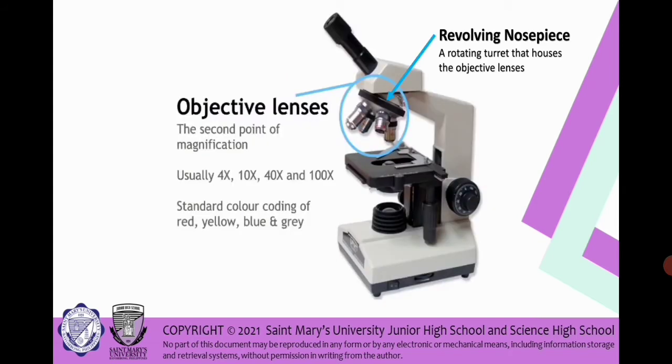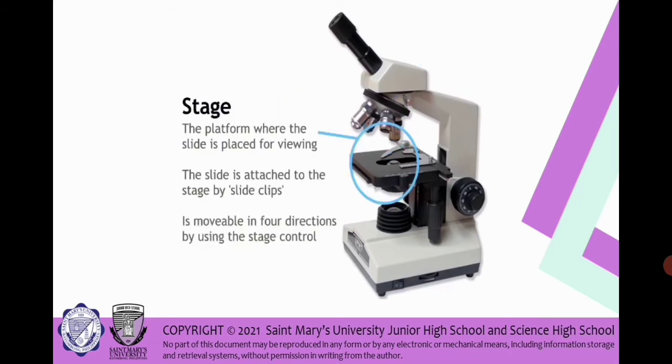Next part we have the revolving nosepiece. The revolving nosepiece is a rotating turret that houses the objective lenses. And we have also the objective lens, the second point of magnification, usually 4 times, 10 times, 40 times, and 100 times, standard color coding of red, yellow, blue, and gray.